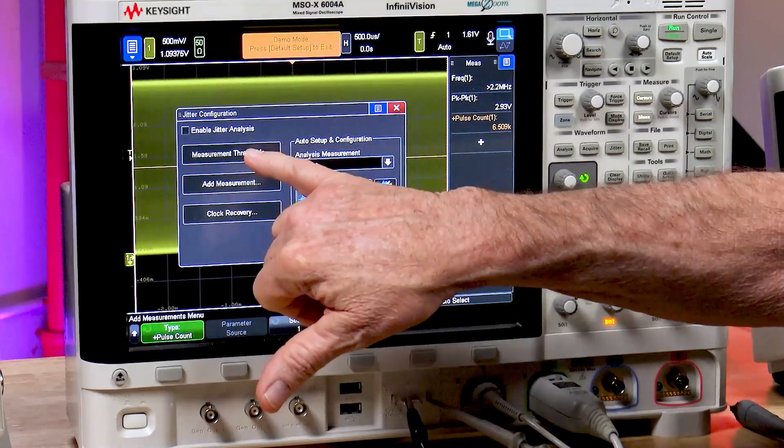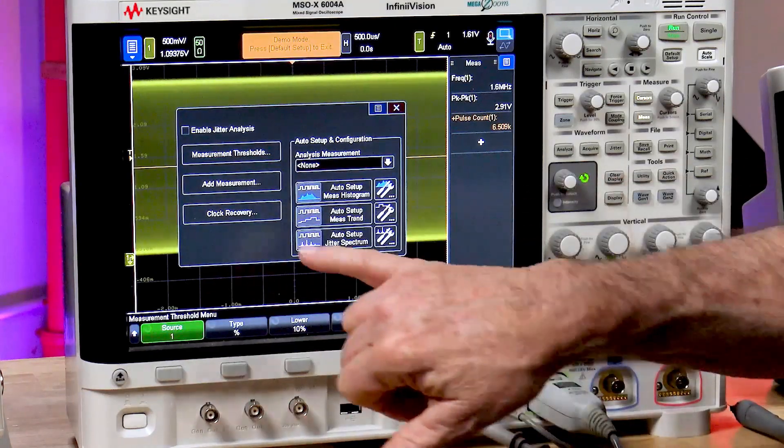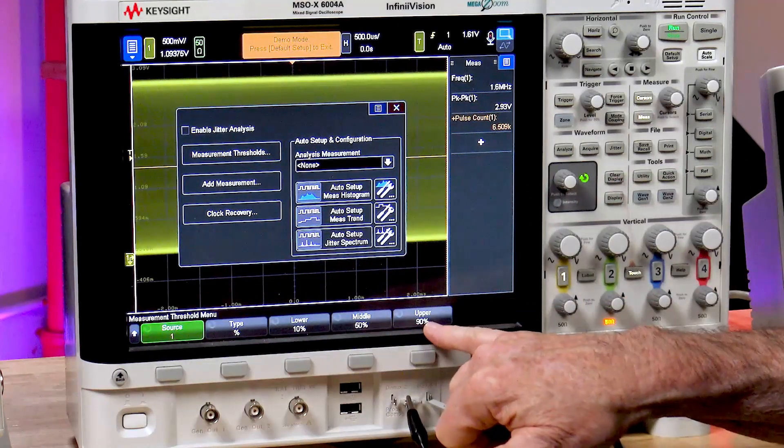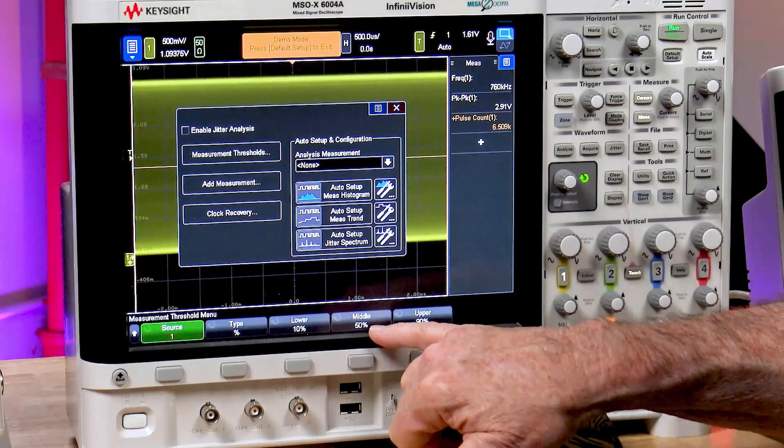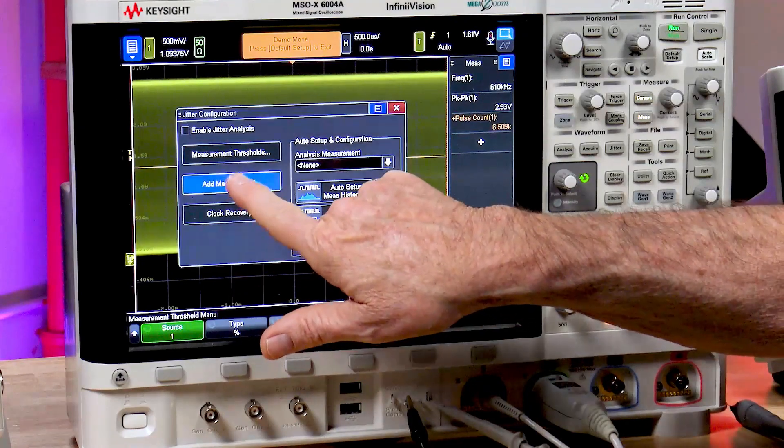The first thing we can select is measurement thresholds. And we'll just use the defaults. We'll perform our jitter measurements relative to 50%. Then we can add a measurement.